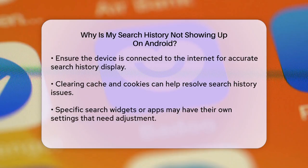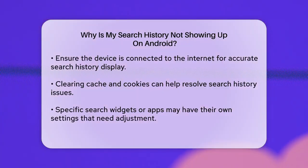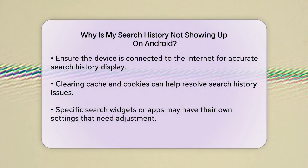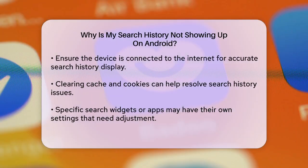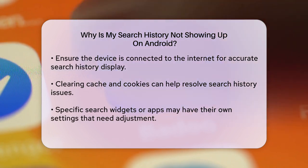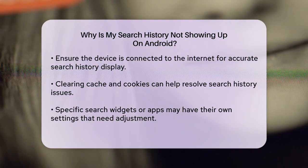For example, if you're using the Google Search widget, you might need to touch and hold on a recent query and then tap Delete to clear it. However, if the history is still syncing across devices, you may need to disable this syncing by adjusting the settings within the Google app.